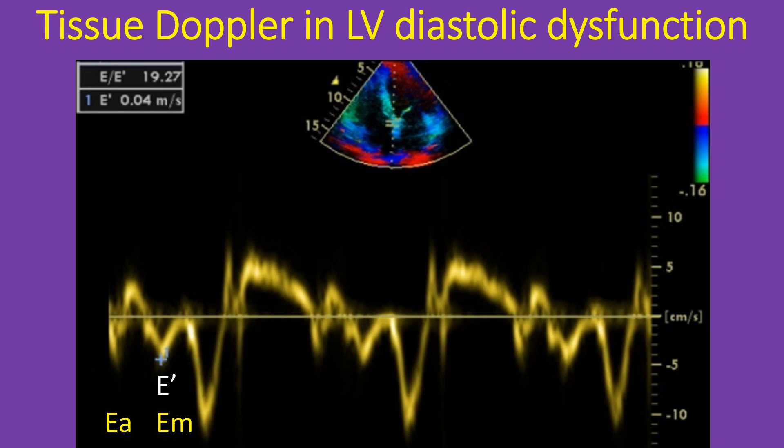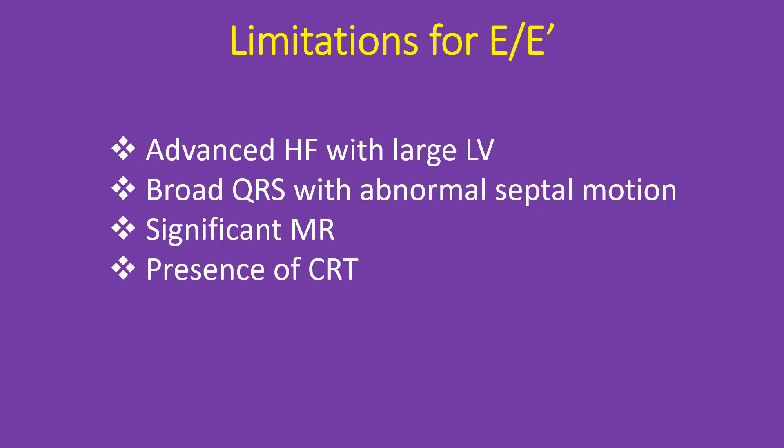Measurement of E prime is useful in differentiation of pseudonormalization in the mitral inflow from the normal pattern. There are also limitations for E by E prime in the assessment of LV diastolic dysfunction: decompensated advanced systolic heart failure with large left ventricle, broad QRS with abnormal septal motion, significant mitral regurgitation, and presence of cardiac resynchronization therapy are all confounding factors.